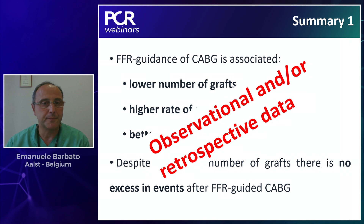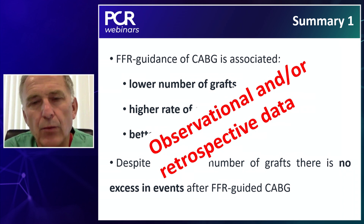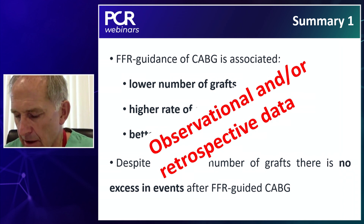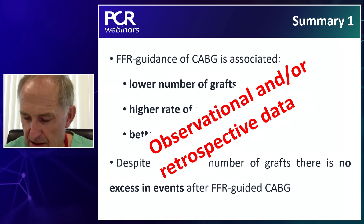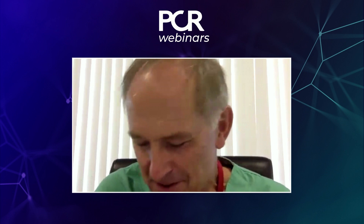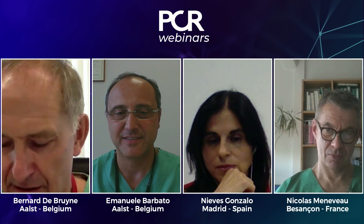The poll data: the question was whether you ever measure fractional flow reserve in patients candidate for CABG — never, sometimes, or systematically. Not a big surprise: 'never' was 19%, 'systematically' was 1%, and the vast majority — 80% plus — answered 'sometimes.' This seems very expected. The surgeons sometimes ask for an FFR value, and this is already a major achievement, as it means surgical colleagues are becoming more aware of the importance of functional stenosis severity, not just angiographic severity.